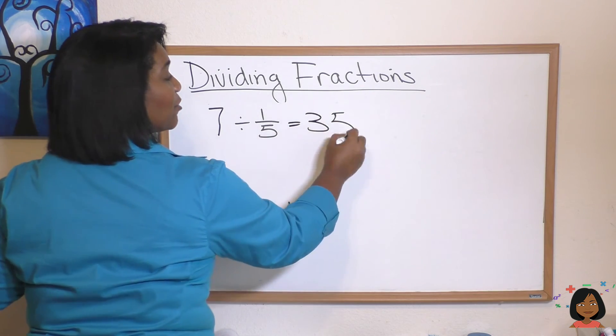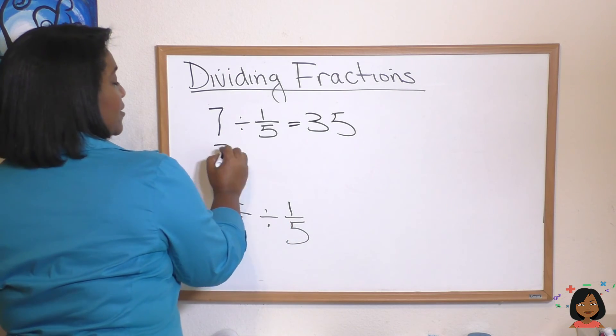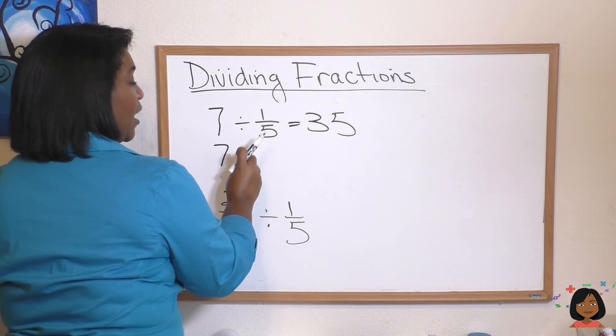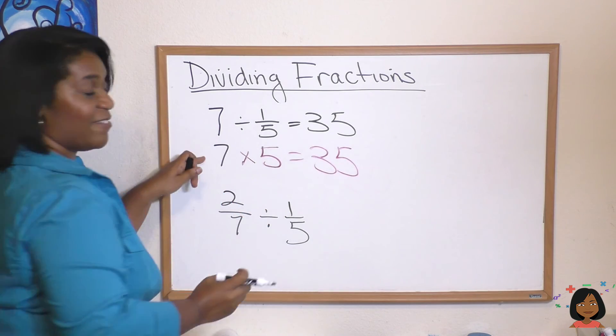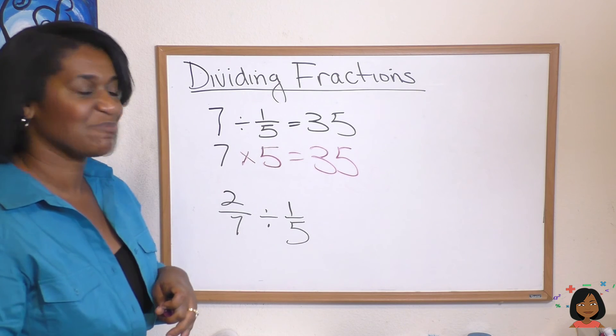That's the way to think through the problem. Now let's do the math. Seven times the reciprocal which is five and I still get 35. Stick to the math version, much easier.